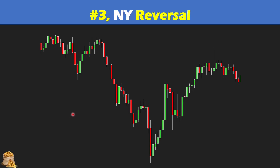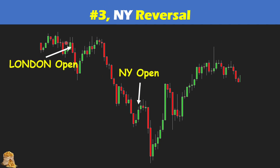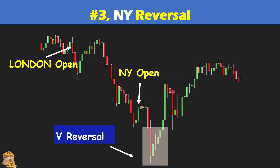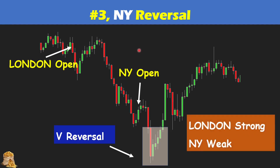Now let's move on to the third trading strategy, which is the New York reversal. We have the London open and the New York open — apparently it is in a downtrend. However, we see two consecutive huge bear bars and then immediately the market reverses the downtrend to a higher level. This is a V-shape reversal, which is a very strong reversal type because it goes higher than the previous major high. If it is strong, the market will go up instead of going down. One thing to notice is that the market didn't go too much further, because the downtrend in the London session was very strong with consecutive large bear bars. If London is strong, normally the New York reversal will be weak.